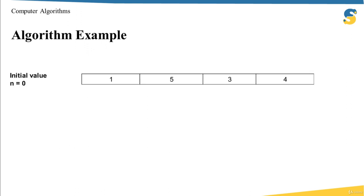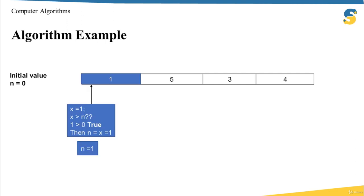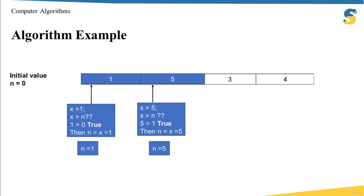Let me explain these steps visually. I have the list: 1, 5, 3, 4, and I set the initial value of N to zero. I compare the first item, which is 1, with N. It's clear that 1 is larger than 0, so I update the value of N to be equal to X, which is 1. The largest value found so far is 1. I then compare 5 with N, and find that 5 is bigger than N which is 1, so I update the value of N to 5.